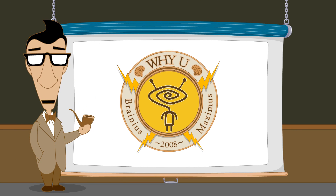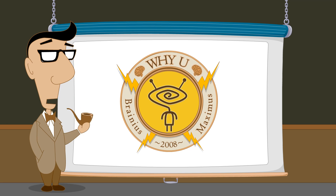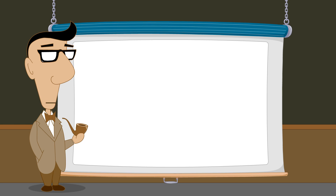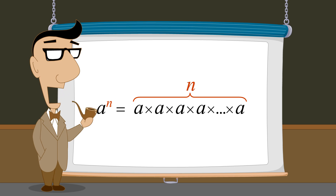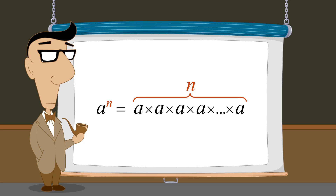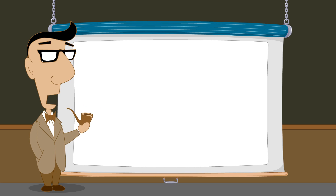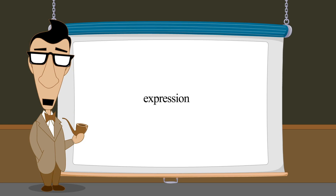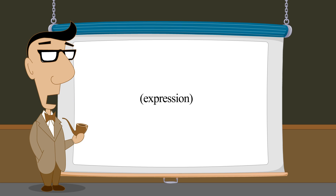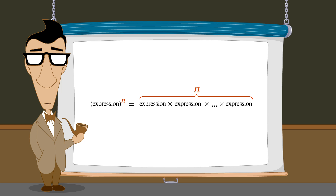Hello, I'm Professor Von Schmohawk, and welcome to Why U. When we first introduced the concept of exponents, we saw that any number a raised to the nth power, where n is a positive integer, is equivalent to n a's multiplied together. This is true not only for numbers and variables but also for expressions. If we enclose an expression in parentheses, we can raise the entire expression to a power, which is equivalent to n copies of the expression multiplied together.